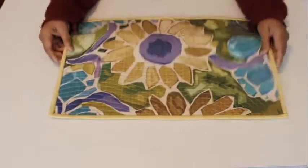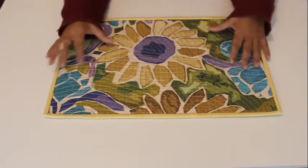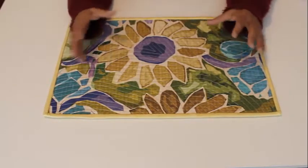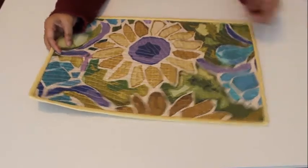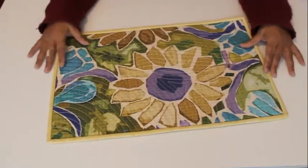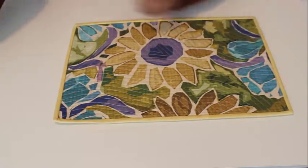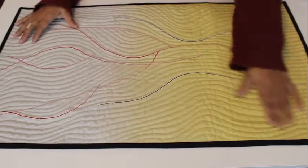And then I just did a traditional mitered border on this one. So this is—I love the size on this one. It kind of looks like a placemat, but you can sort of hang it up, and I think you can orient it in different ways if you'd like. So this is an example of one of the digital fabric pieces.